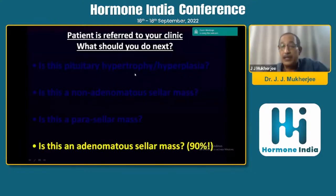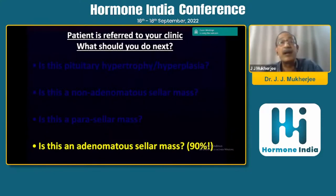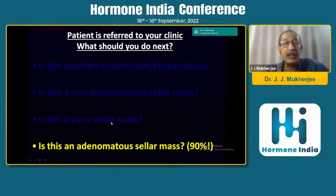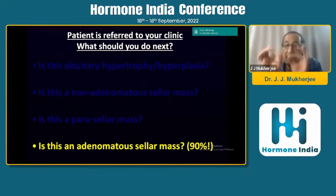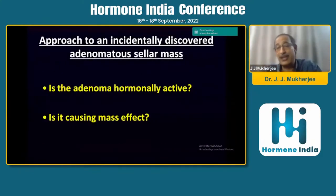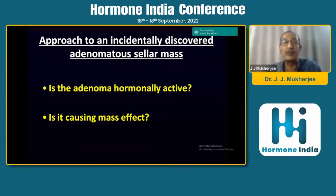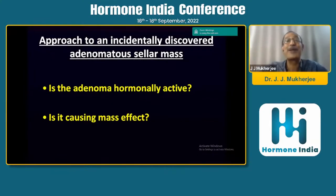Going back to our patient: is it pituitary hypertrophy? No — it's a well-defined lesion. Is it a non-adenomatous sellar mass? No — it is in the pituitary gland. Is it a parasellar mass? No. The stalk is nice and thin. There is no dural tail sign. So we are dealing with a common garden 90% pituitary adenomatous incidentaloma. Looking at the MRI, you know in one minute: this is an adenoma. Let's move on.